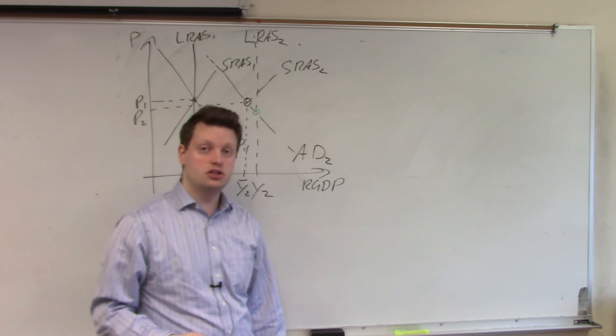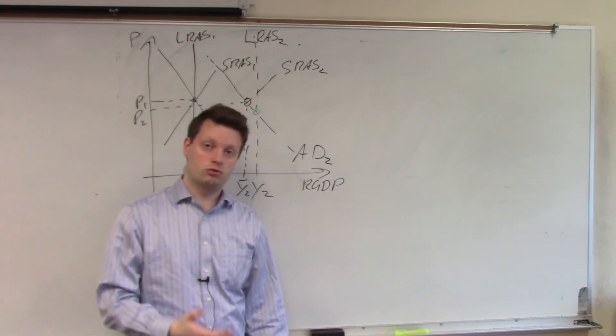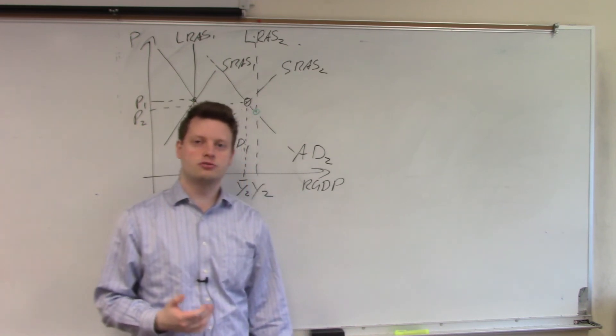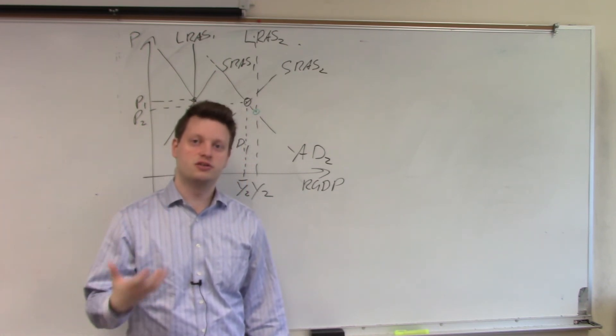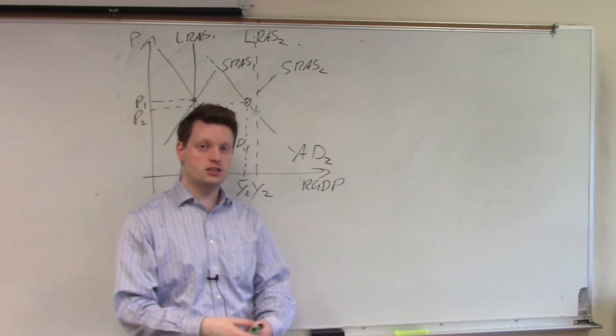And because the interest rate goes down, firms can borrow at lower interest rates. And through borrowing at lower interest rates, firms have a higher incentive to invest in this economy. As firms invest more in this economy, they will shift aggregate demand to the right.